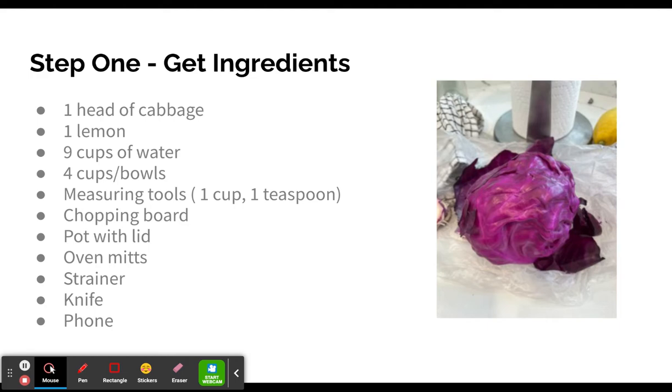So the first step is to gather your ingredients. In order to do this, you will need one head of cabbage, one lemon, nine cups of water, four cups or bowls, measuring tools including one cup and one teaspoon, a chopping board, a pot with a lid, oven mitts, a strainer, a knife, and your phone.